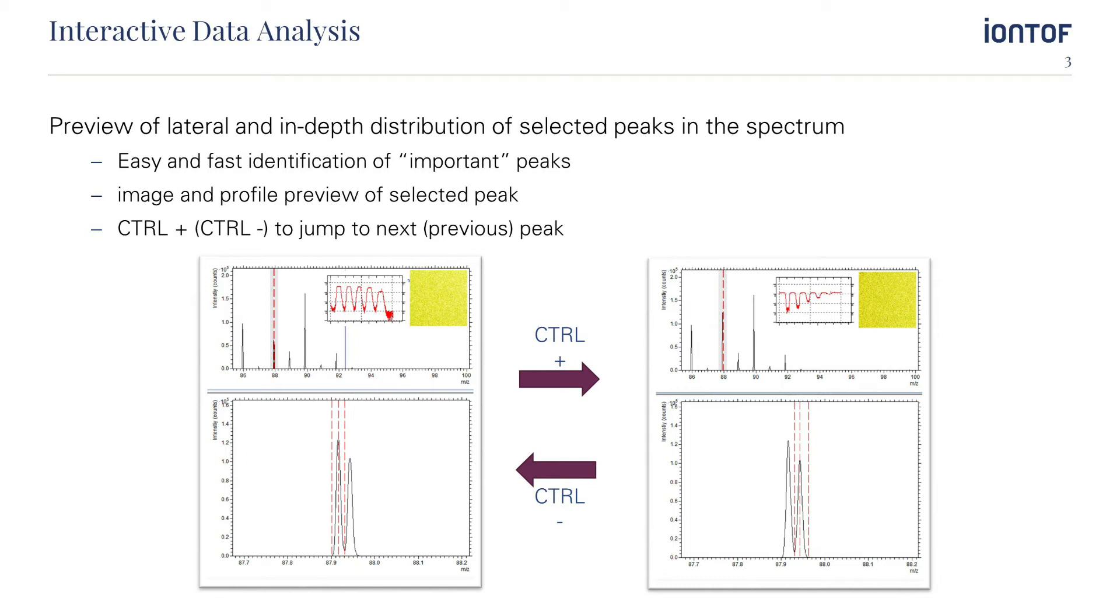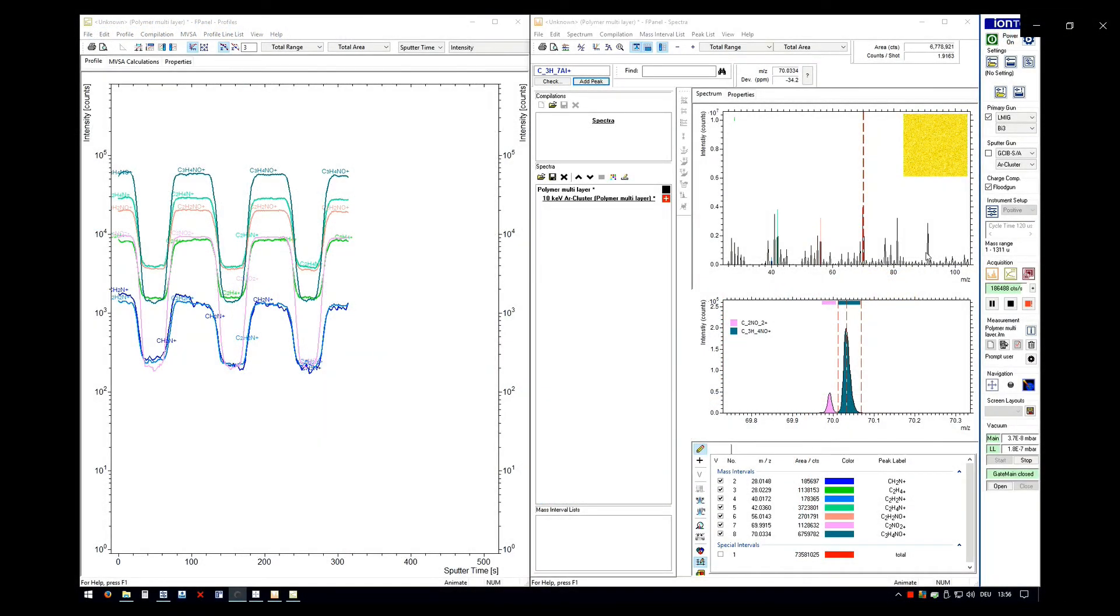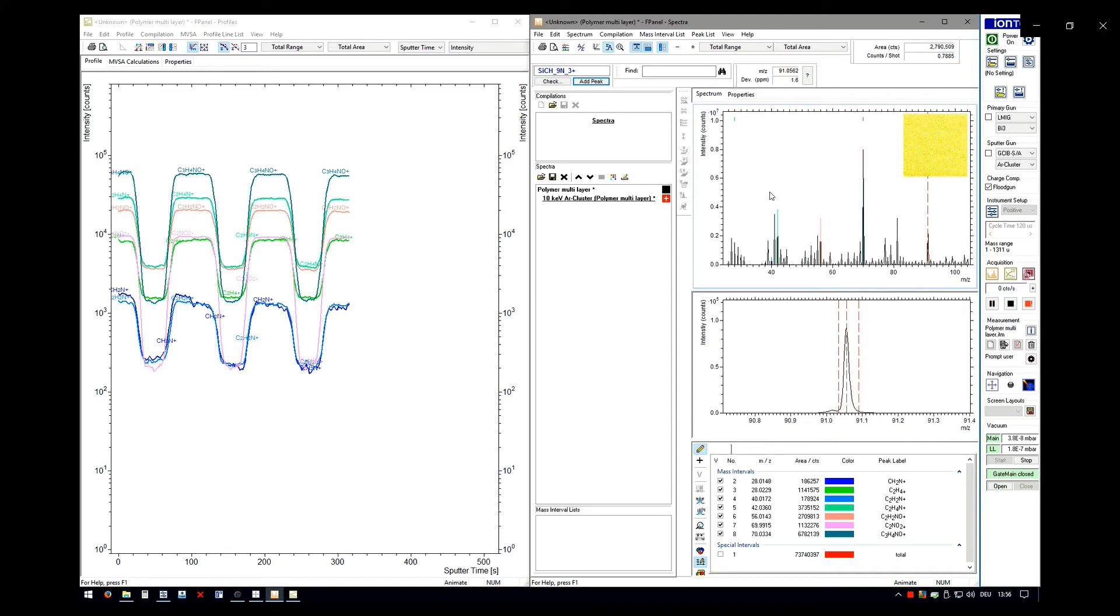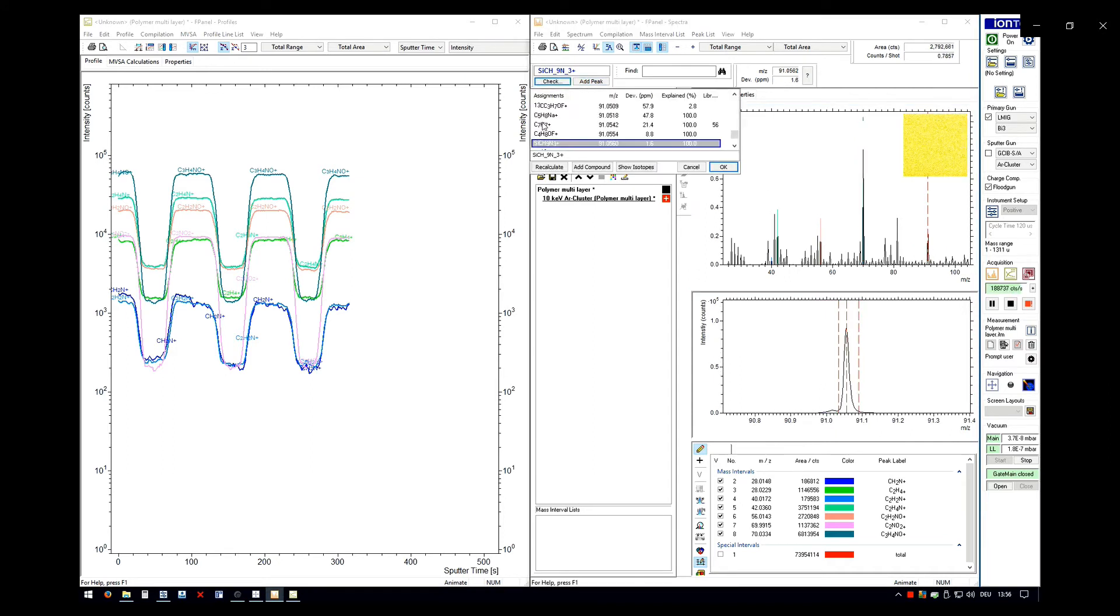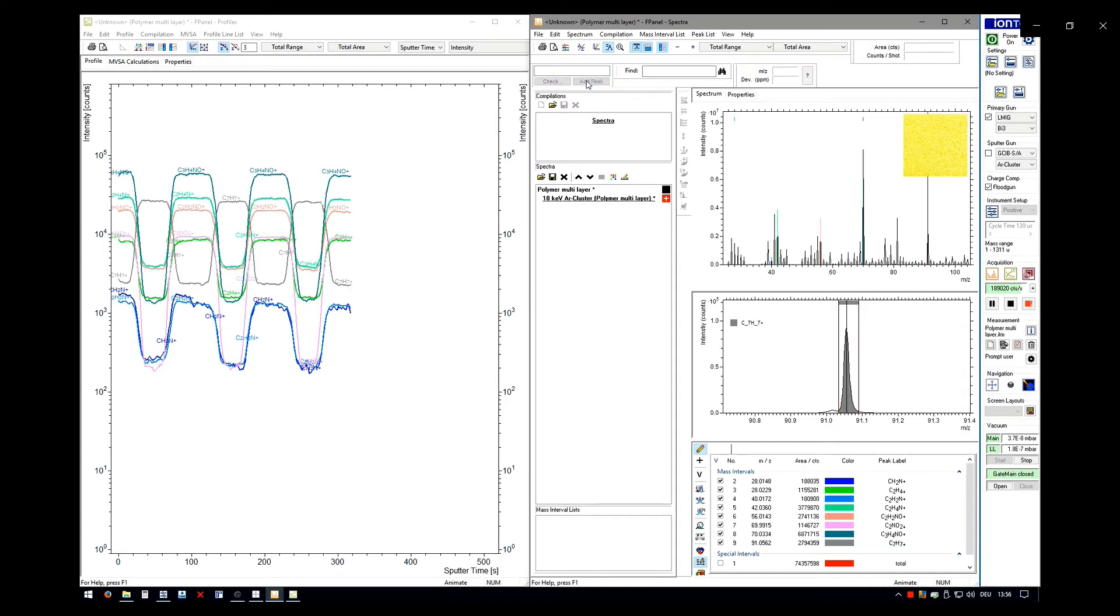Let's have a look at the live data acquisition to get the best impression of the powerful interactive data analysis. This is a depth profiling acquisition and you can see, as soon as you select a mass interval and add it to the peak list, the profile line will appear from the very beginning of the acquisition.